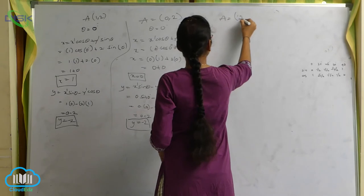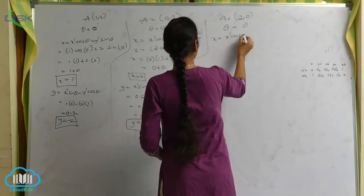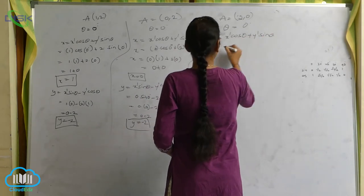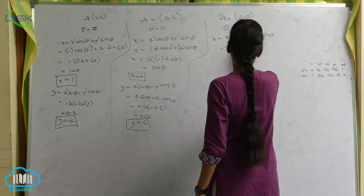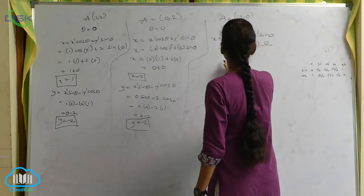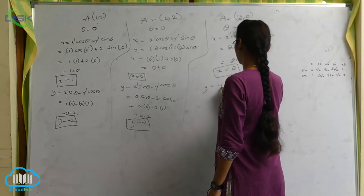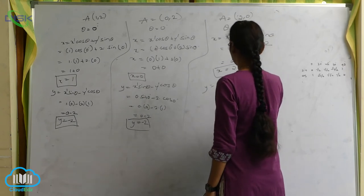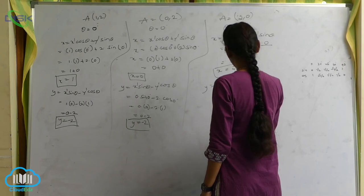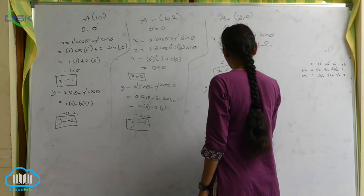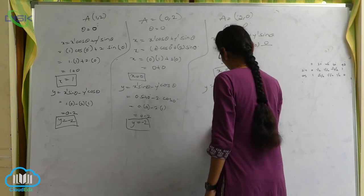For point (2, 0) with θ = 0°: x = x' cosθ + y' sinθ = 2 × cos0° + 0 × sin0° = 2 × 1 + 0 = 2. So x = 2. For y: y = x' sinθ − y' cosθ = 2 × sin0° − 0 = 2 × 0 = 0. So y = 0. Note: sin0° = 0 and cos0° = 1.